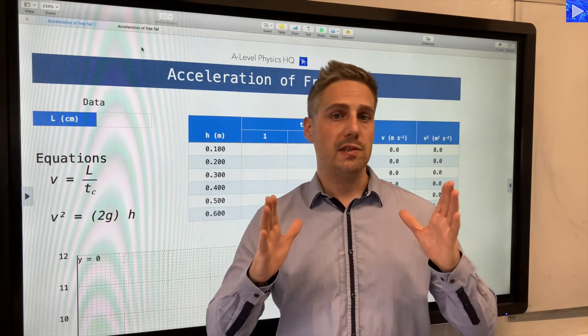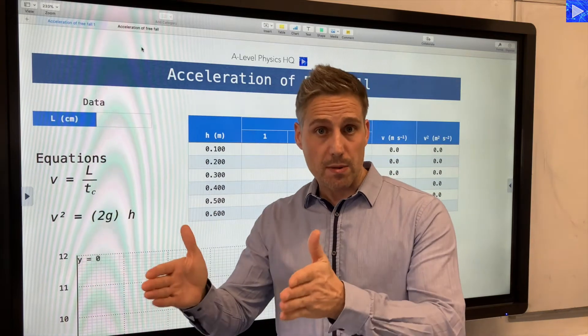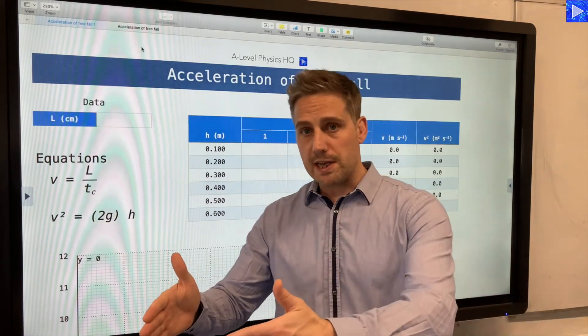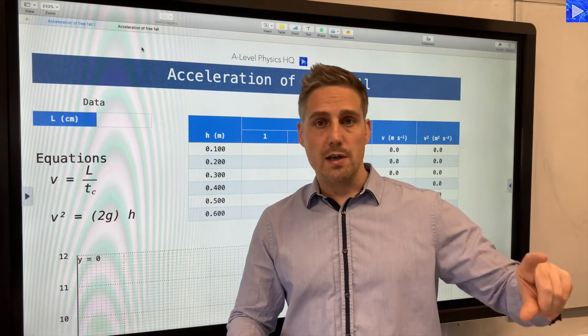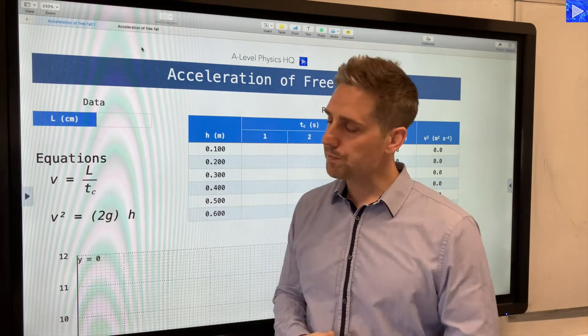Now the big mistake that people make with this experiment is the light gate. If you remember, it was connected to a timer, and the big mistake is they say that time is the time that it took for the card to fall through height h. That's incorrect.